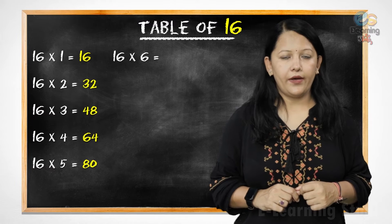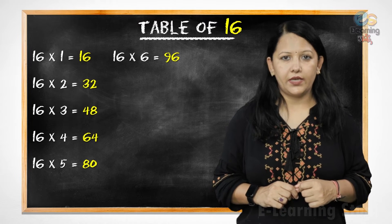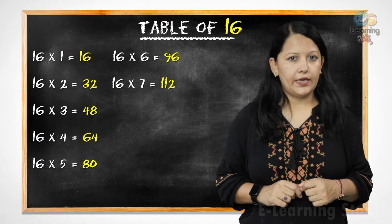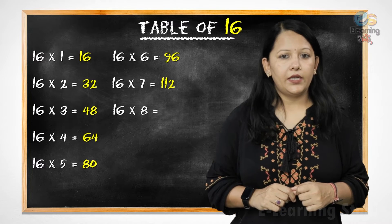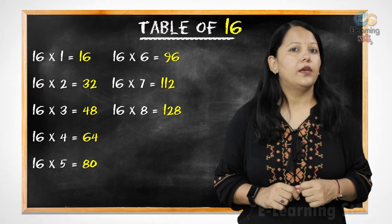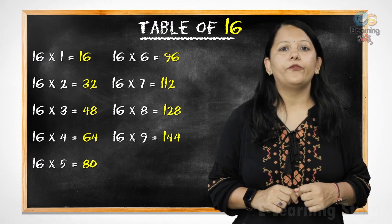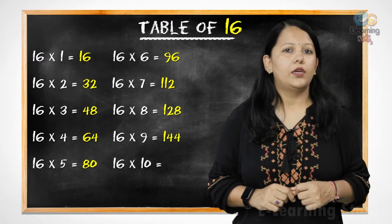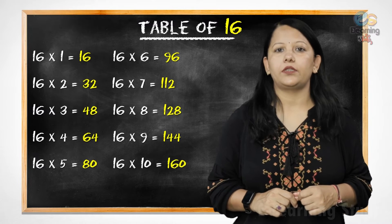16 6s are 96, 16 7s are 112, 16 8s are 128, 16 9s are 144, 16 10s are 160.